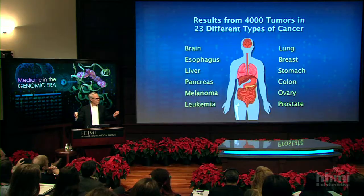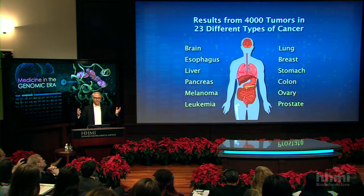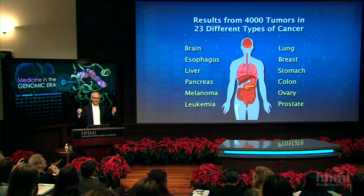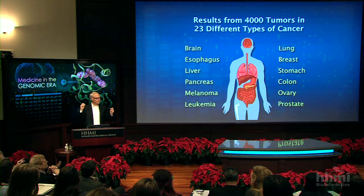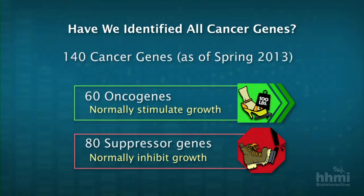I want to pause for a minute and get you to think about what are the possible questions that can be asked and answered once you have this avalanche of data. One of the first ones that comes to mind is: in each individual patient's tumor, how many mutations actually are there? As of a data analysis from earlier this year, the number of cancer genes is 140.